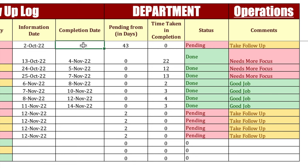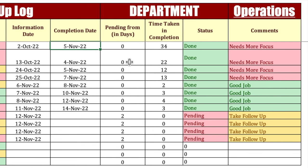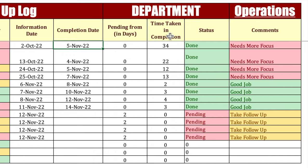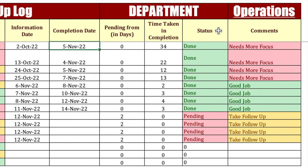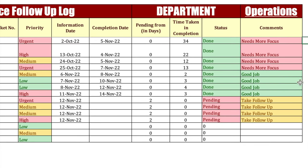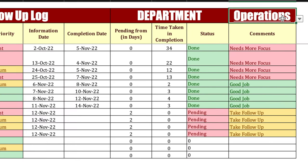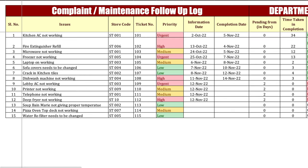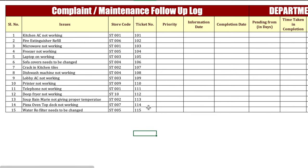The status shows pending and comments show 'take follow-up'. As soon as I put the completion date, all the things will change. You will notice that the days which were in pending from shifted to time taken in completion. Status became done and turned green, and comments became 'needs more focus'. One more thing — the department will also be managed by drop-downs. Let's start creating a new sheet.